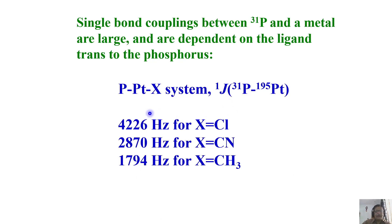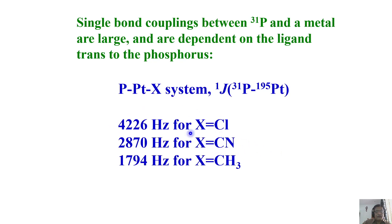In the case of platinum, consider a system like phosphorus-platinum-X. We can look at the platinum-to-phosphorus coupling. Phosphorus is a spin-half nucleus. Depending on the X substituent, the coupling between phosphorus and platinum can be of the order of 4.26 kilohertz when X is chlorine, and close to 2.9 kilohertz when X is a CN group. You see, so far we have been discussing proton and carbon where coupling constants are of the order of a few hundred hertz or a few tens of hertz. But for exotic or heteronuclear nuclei, coupling constants can be of the order of several kilohertz.